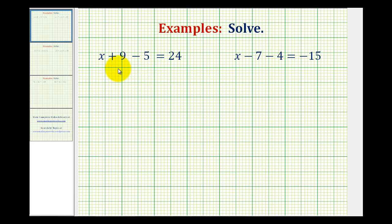So looking at this first equation, we should subtract these two constants before we try to solve for x. And since 9 minus 5 is equal to 4, this is going to simplify to x plus 4 equals 24.